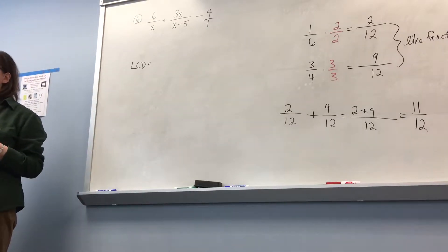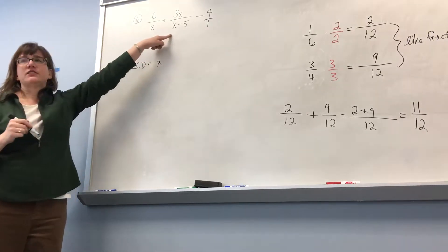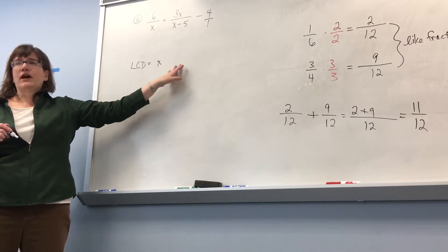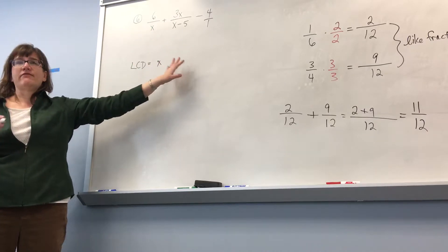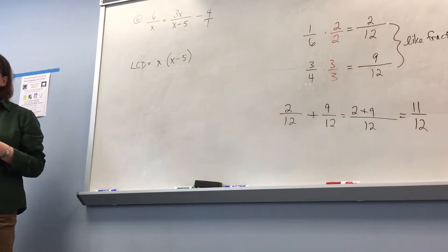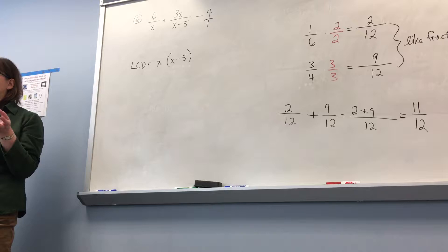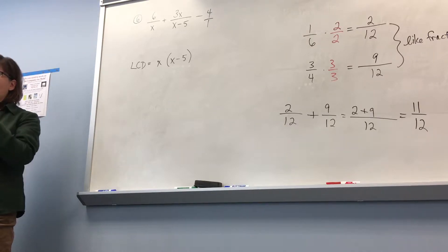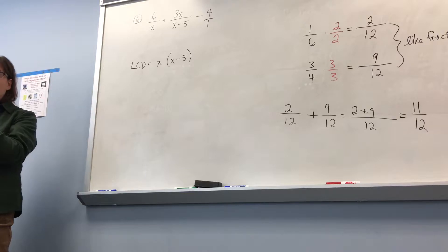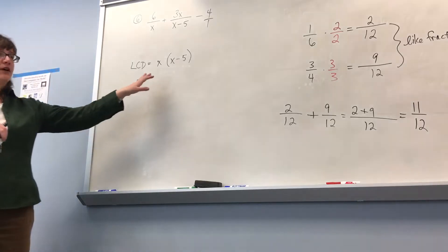The least common denominator has to represent all of the factors, so I need to have the x. The second fraction has x minus 5 — I can't just put a minus 5 on here, I have to have that whole factor, x minus 5. So the least common denominator is x times x minus 5. People think x minus 5 is the LCD, but I can't take x times something to get x minus 5.